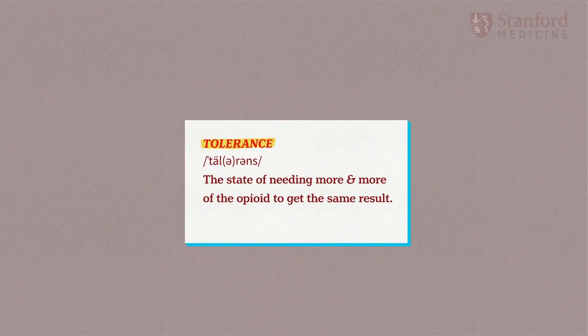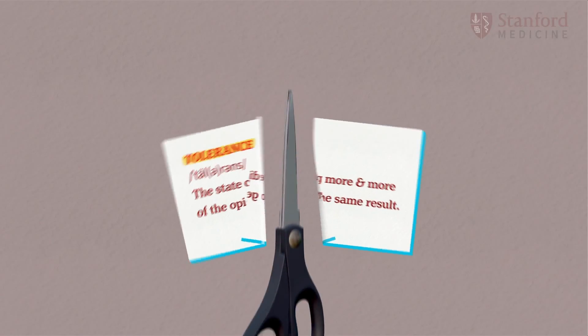But one risk of chronic opioid therapy that often goes ignored is simple tolerance. Tolerance is the state of needing more and more of the opioid to get the same results. Once a patient develops tolerance, that patient probably needs to come off of chronic opioid therapy because no amount of opioids will be enough to cover their pain.